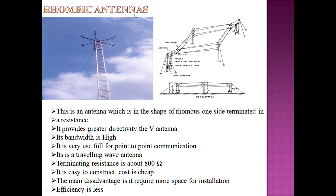This is the rhombic antenna, which has the shape of a rhombus. It is a combination of the V antenna and the inverted V antenna. It has high bandwidth and can be used for point-to-point communication. It is a traveling wave antenna, easy to construct, and cost is cheaper. The drawback is that it requires more space for installation, efficiency is less, and one end is terminated with a resistance of around 800 ohms.